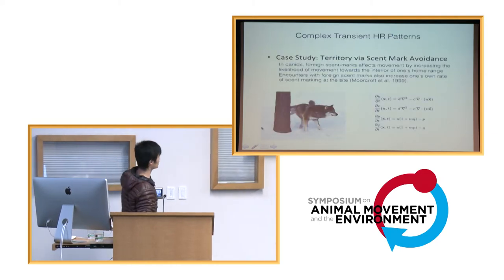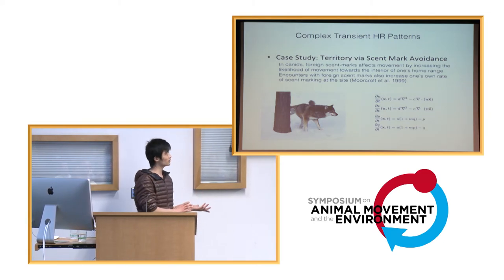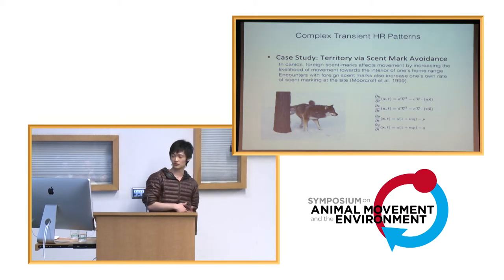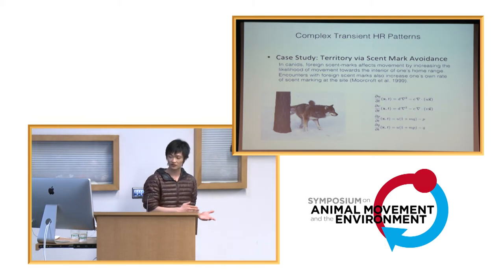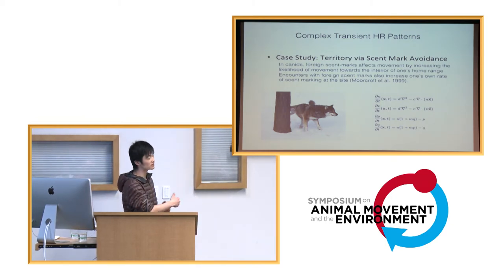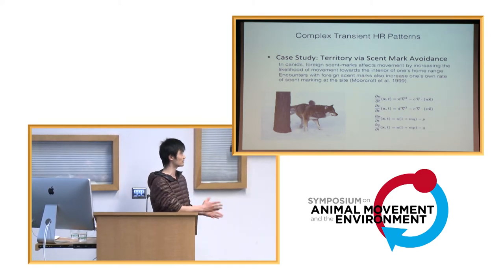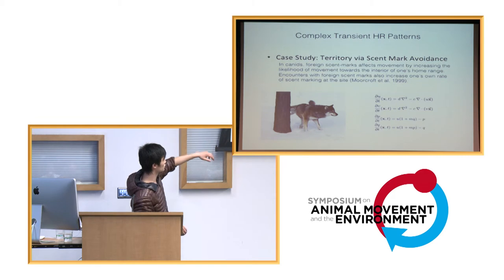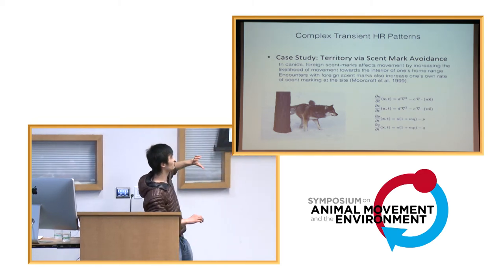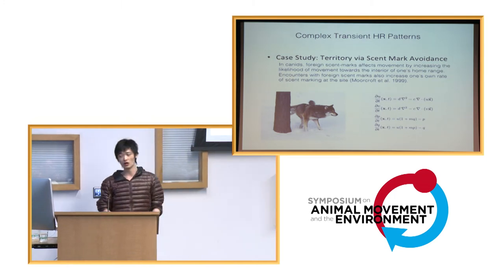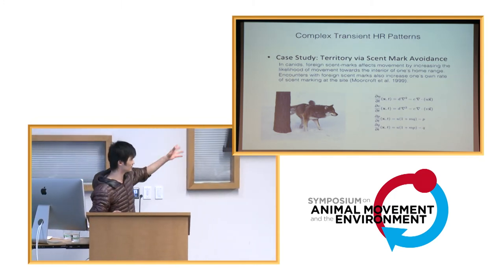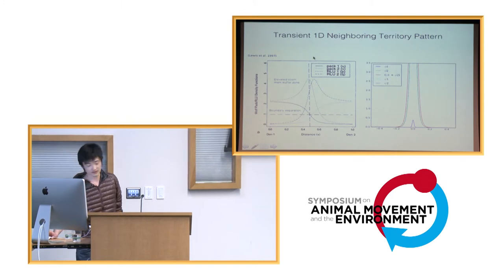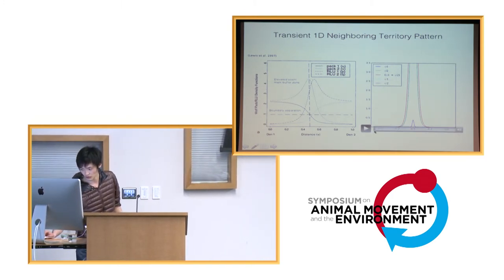So, to put this to the test, some of you might know this famous territoriality model, where they looked at how territories between conspecifics are formed between neighboring wolves. And what the wolves do is they leave scent marks at a certain rate, but when they detect the presence of a neighbor, they will leave more scent marks and move faster towards their own densite. To capture this entire process, the original set of equations is listed there. You basically have two coupled sets of advection-diffusion equations, which makes solving, even in terms of steady-state solutions, an absolute nightmare. But we can utilize the transient PhiPy toolkit to do the same thing for us.